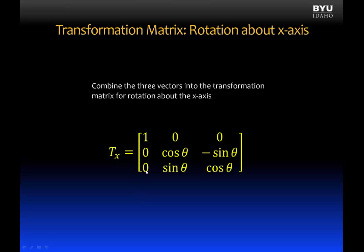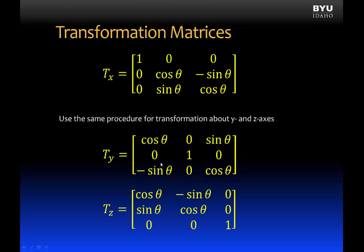We now combine those three vectors to create our transformation matrix for rotation about the x-axis. Using the same procedure for rotation about the y and z-axis, we would get similar-looking transformation matrices. Now that we have our transformation matrices, we can generate a set of coordinates in one plane and use them to rotate into 3D space.